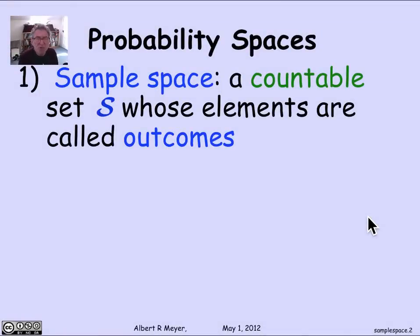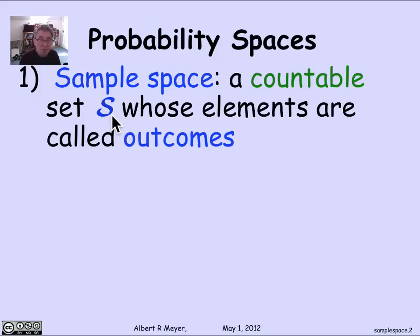The abstract setting of a probability space starts with a set of outcomes, which is what we saw with the tree models in the previous videos. The condition we require is that there should be a countable set of outcomes. The sample space is designed to model all the possible things that can happen as a result of your random experiment — all the possible outcomes — and we require that there be a countable number.